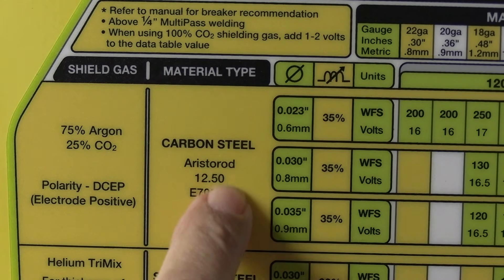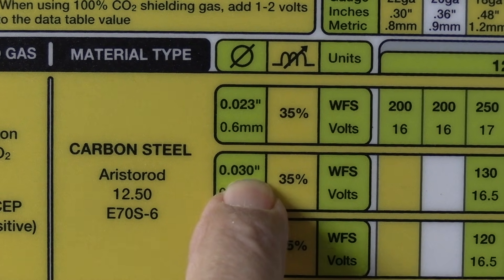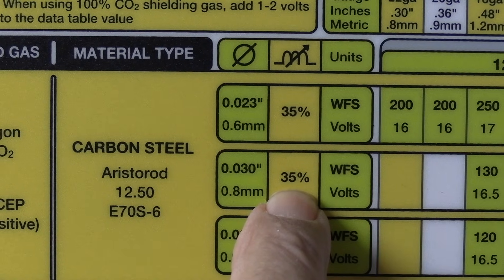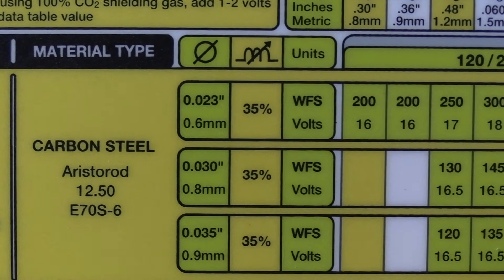Like a lot of machines, it's got a chart on the inside of the door to guide you along. You follow what wire sizes you're using, what gas you're using. This tells me I need to use 35% inductance. We'll talk about that a little bit later.